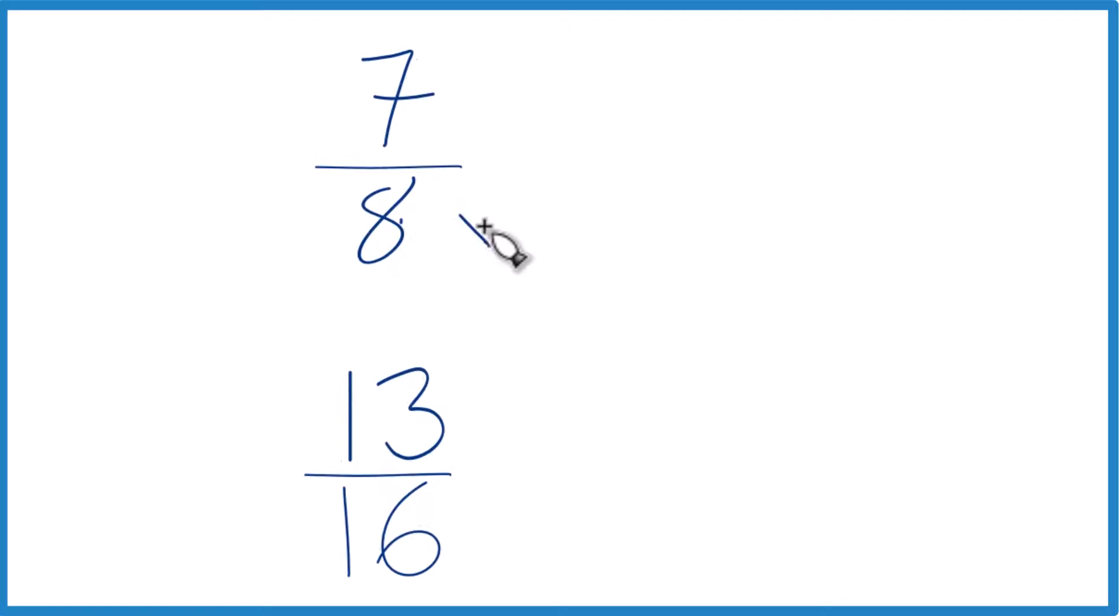Let's do this. Let's take 8 times 2, 8 times 2 is 16. We already have 16 here, so let's just keep this 13 sixteenths like this.